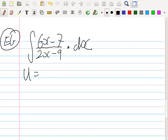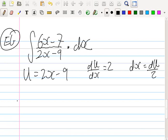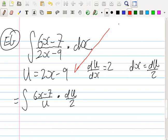Although something slightly different happens here. So what is du dx here? 2. So what is dx? dx is du over 2. So this now becomes 6x minus 7 over u times du over 2. Now this is a problem because you need just u, not x. So how can we deal with this? Who remembers this? You replace the x by using this formula here. So up the top here, you can say u plus 9 over 2 equals x. So you can plug that in for the x.